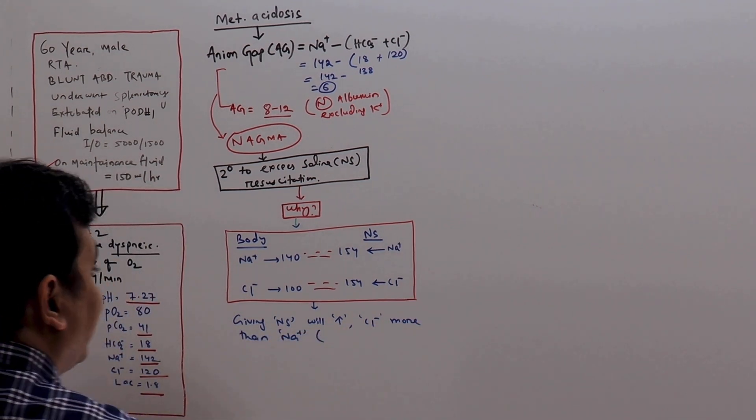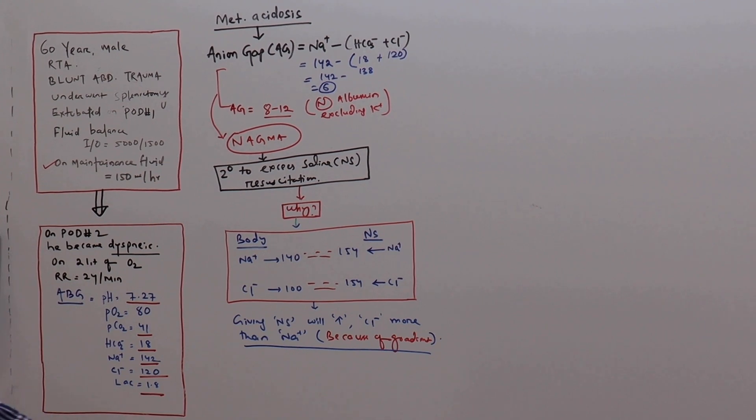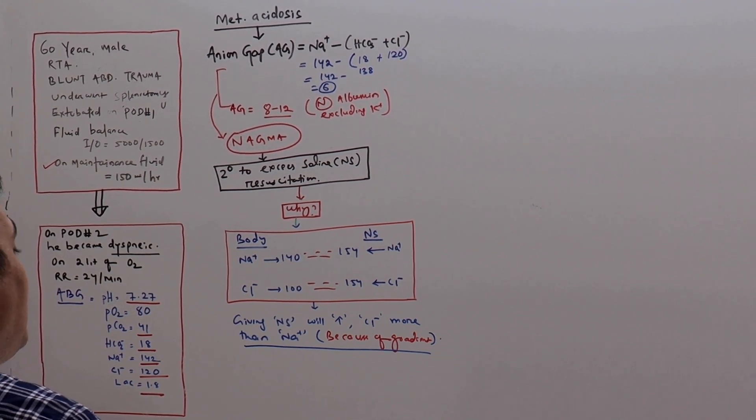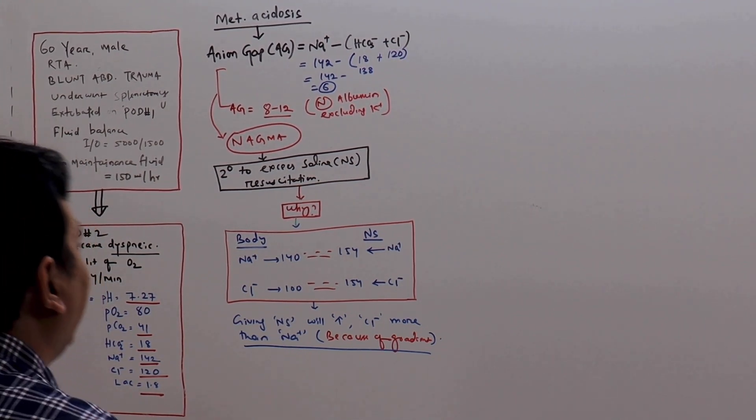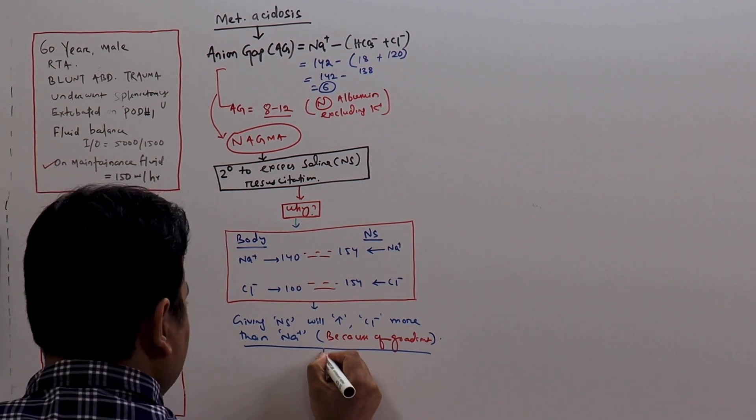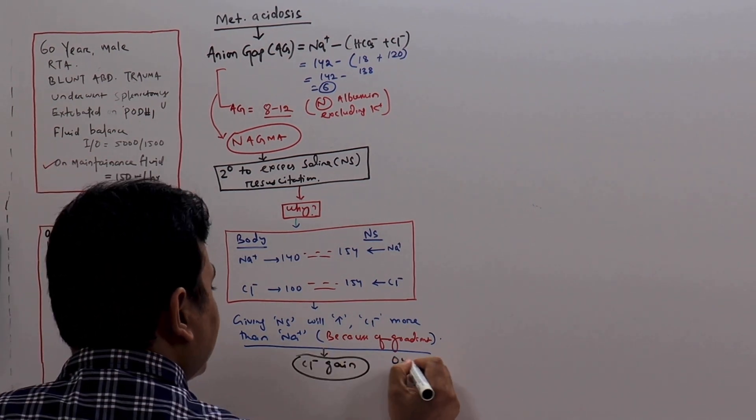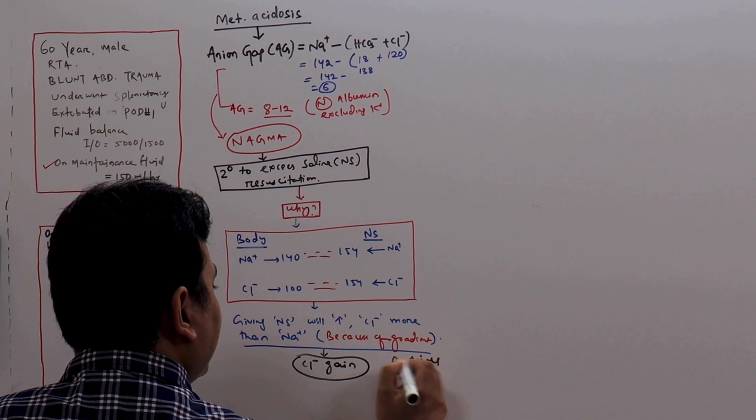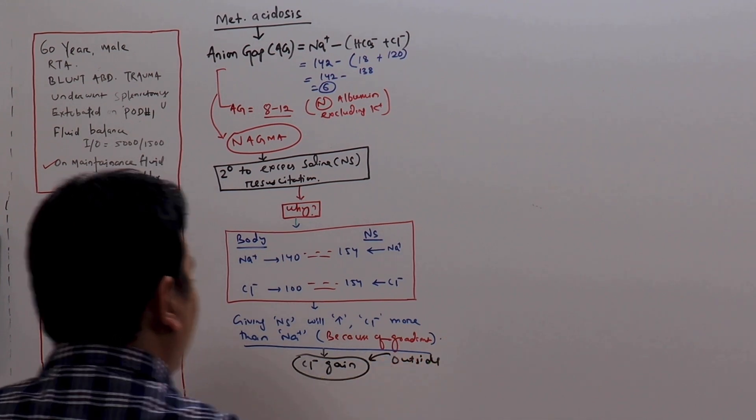Giving normal saline will increase chloride more than sodium, and this is because of the gradient. But then, so what? If chloride is increased more, how it is converted to acidosis? Let us discuss. This is chloride gain from outside. We are giving saline that is causing the chloride gain. Obviously, this is extra renal cause.